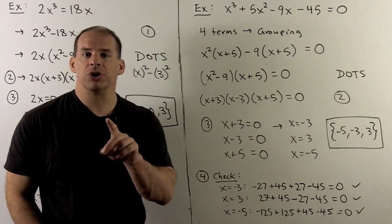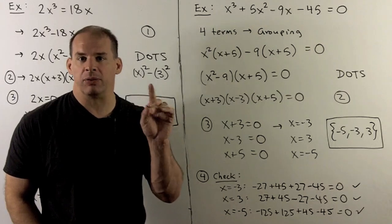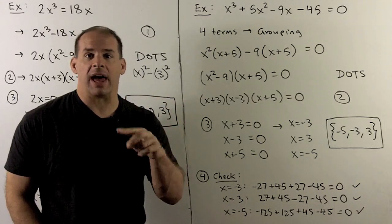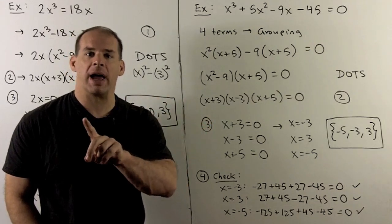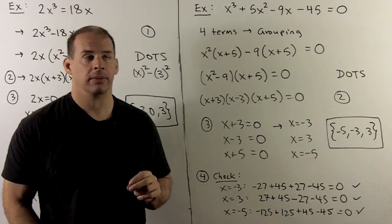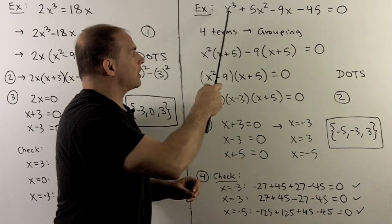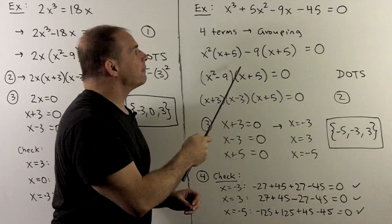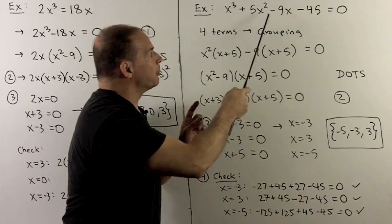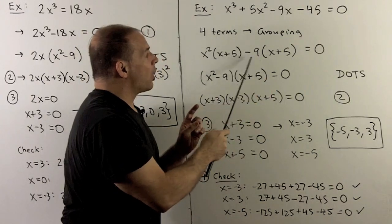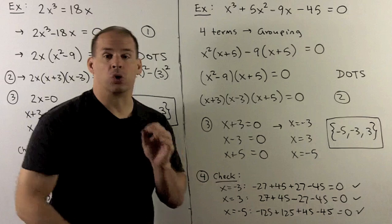One thing I do note, we have four terms. Four terms are what we need for grouping. So we could try that. It might not work, but if we try it, not a bad idea. Now, out of the first two terms, I could pull an x squared. That leaves an x plus 5. Out of the last pair, I could pull out a minus 9. That also leaves an x plus 5. So grouping will apply.